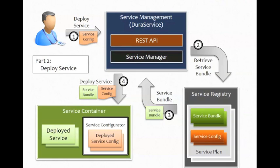Part two: the user passes in the request to deploy a service along with the filled-out configuration. DuraService goes back to the service registry for the service bundle, then passes the bundle and configuration down into the service container — an OSGi container that deploys and starts the service, runs a configurator that stores the configuration and passes it to the service as soon as it starts. At that point the service is started, configured with the right information, and can begin its work.